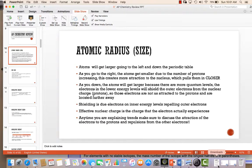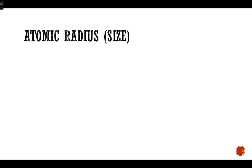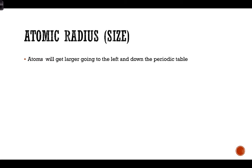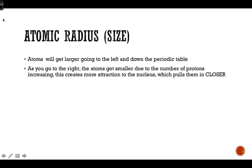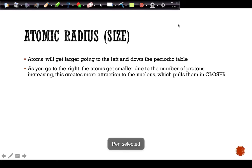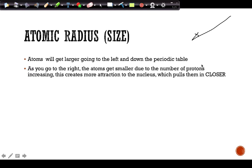Atomic radius is basically just the size of atoms. Atoms will get larger going to the left of the periodic table and downward — it's pretty much one of the only trends that goes in that direction. As we go to the right, atoms will get smaller because the protons are increasing.